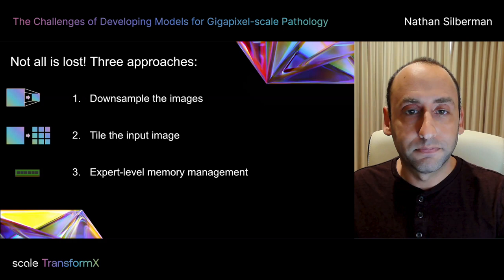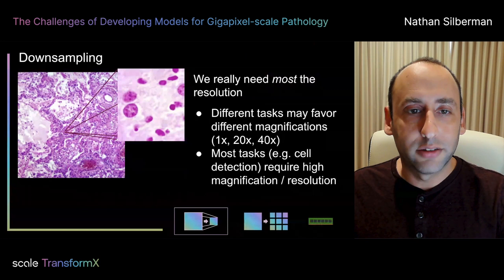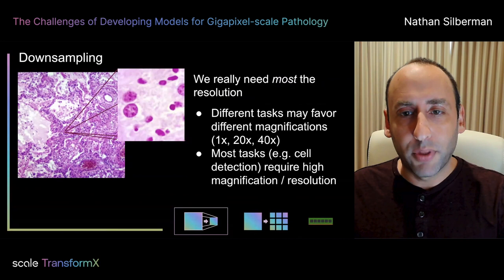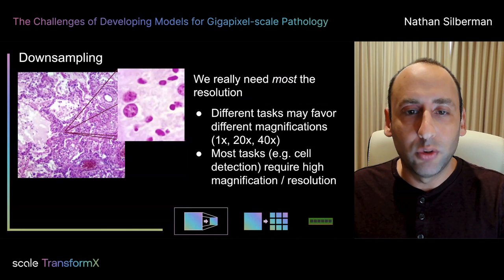In computer vision, down-sampling is super common, nearly standard, across a wide range of applications, and that usually results in an image resolution that retains enough detail to be useful while permitting efficient interpretation. Unfortunately, in the pathology space, the fine-grained details really matter. Discriminating between immune cells is already difficult and becomes impossible very quickly when you shrink the image size. So down-sampling, unfortunately, isn't a realistic solution.